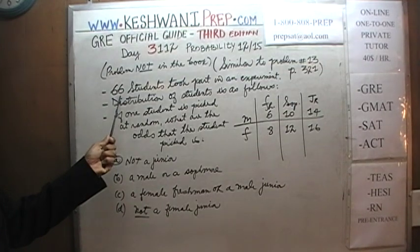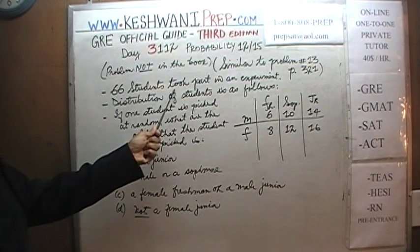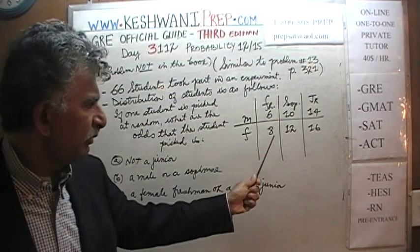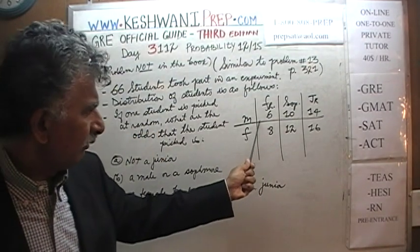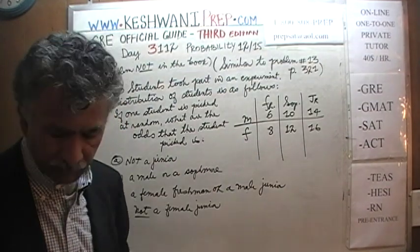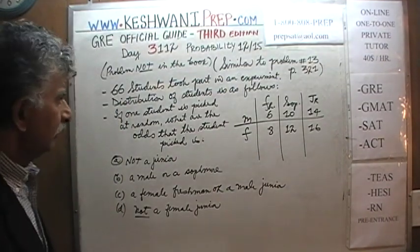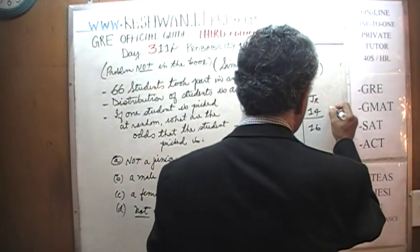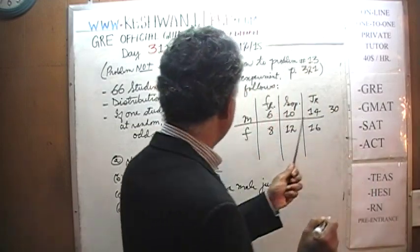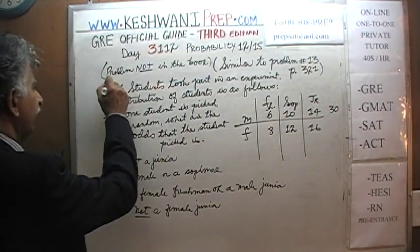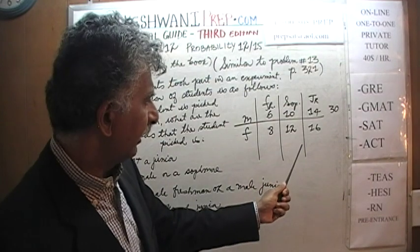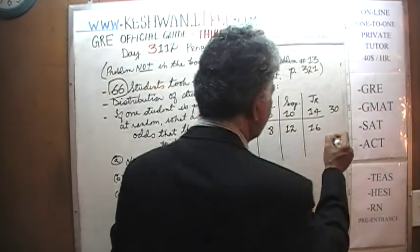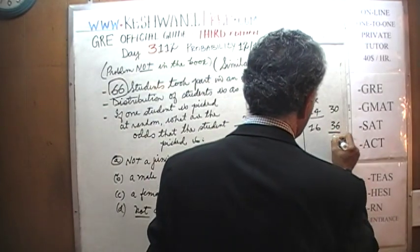The problem says: 66 students took part in an experiment. If you add up all the males and all the females, they should total 66. For the males: 6 plus 14 is 20, plus 10 is 30. Since the total is 66, the females should add up to 36. Let's verify: 12 plus 8 is 20, plus 10 is 30 — wait, plus 16 gives 36. Yes, that confirms 66 total.